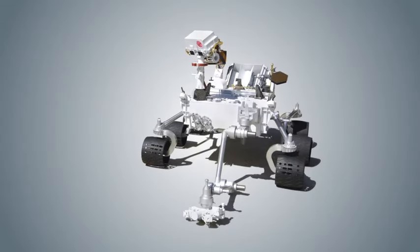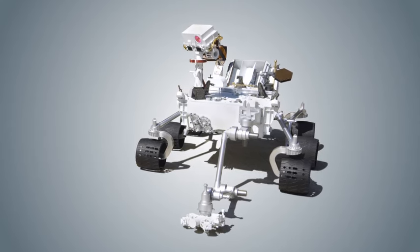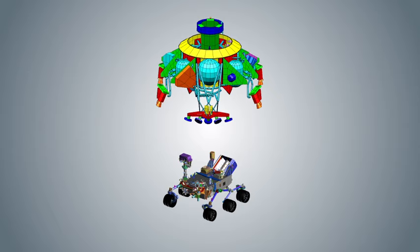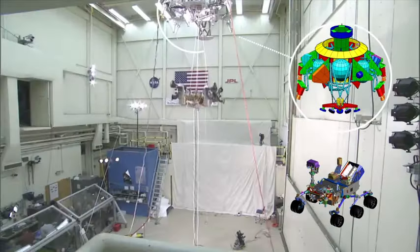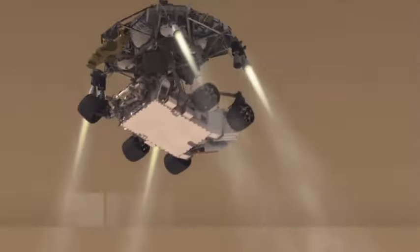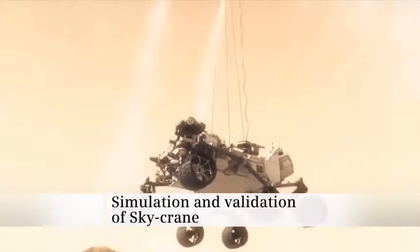Curiosity's total mass is five times larger than the mass of the largest rovers previously sent to Mars. Innovative maneuvers and technology to land a heavier spacecraft with greater precision were also developed and proven using Siemens software. And Curiosity made a perfect landing in August of 2012.